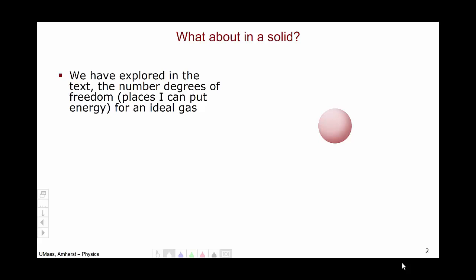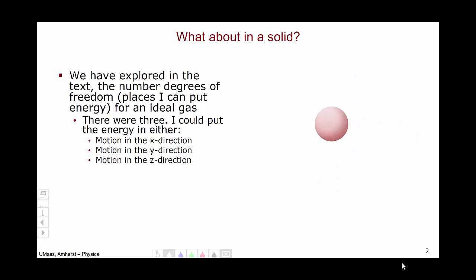We have already explored in the text the number of degrees of freedom, places I can put energy, for an ideal gas. For an ideal gas, there were in fact three degrees of freedom, as I could either put energy into motion in the x direction, motion in the y direction, or motion in the z direction. So three places I can put energy, three degrees of freedom.